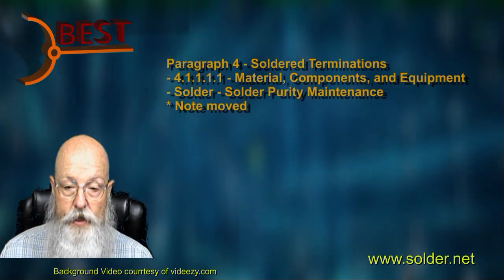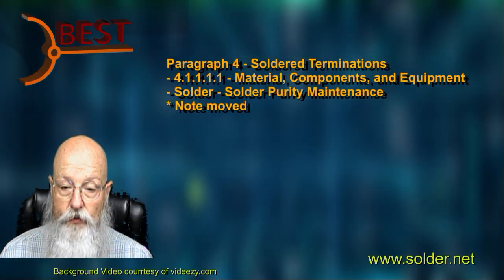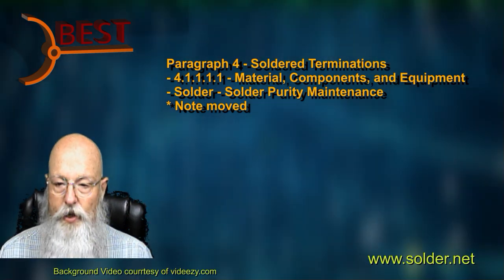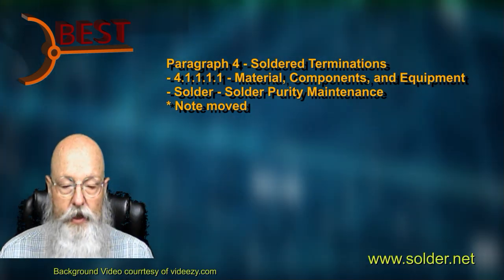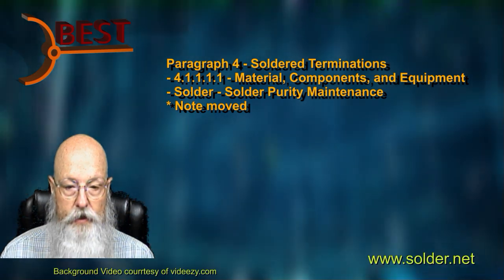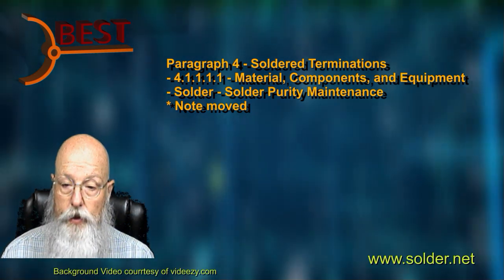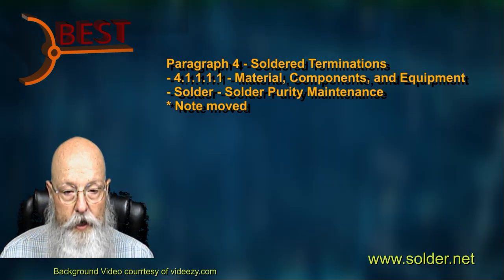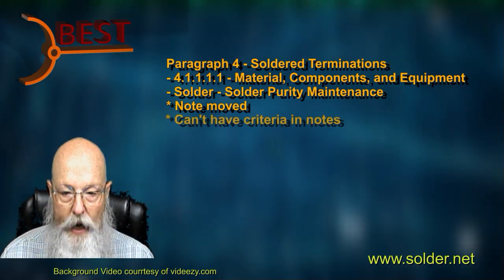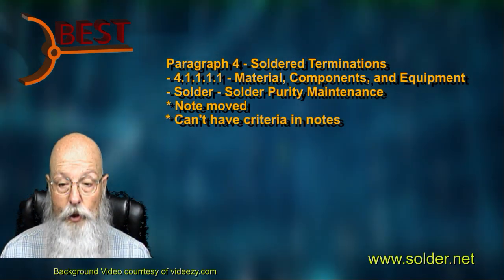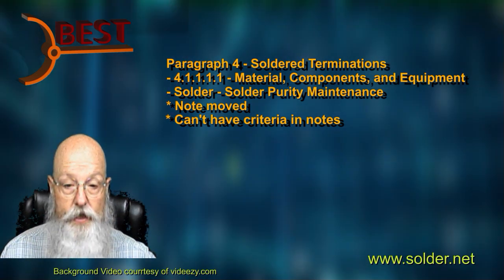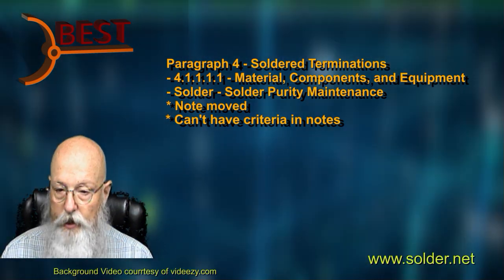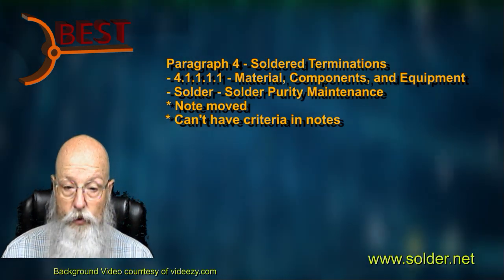Our next criteria modification comes in Section 4.1.1.1.1.1, where the statement of specific silver content for tin-lead silver alloys has been moved out of the note for Table 4-1. The criteria have not been modified, but the practice of having requirements in a table note is not allowed in standardized criteria documents. This is simply a correction of an oversight from previous revisions.